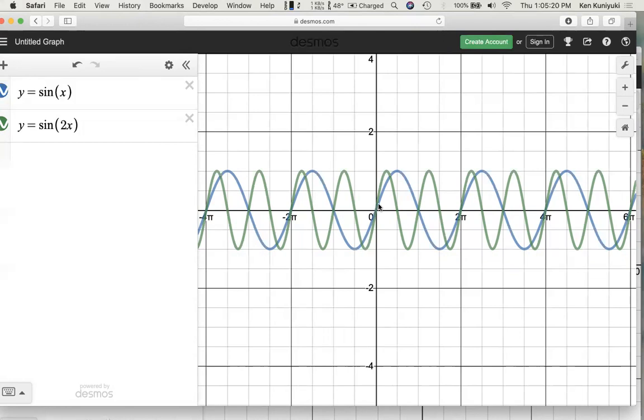Now, in green, we have two cycles. 1, 2. b here, the 2 here, tells you the number of cycles on the new graph that fits into the old period, 2 pi. On the blue graph, you had one cycle between 0 and 2 pi. On the green graph, you have two cycles between 0 and 2 pi.